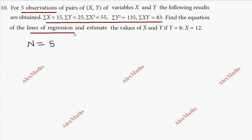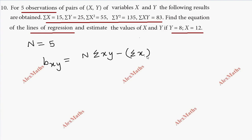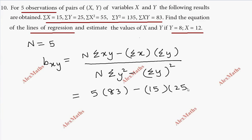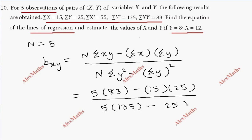Now, find the equation of the lines of regression. So bxy equals n into sigma xy minus sigma x into sigma y, whole divided by n into sigma x square minus sigma y whole square. This is the direct substitution. So 5 into 83 minus 15 into 25, whole divided by 5 into 135 minus 25 whole square.